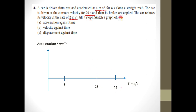To determine when the car stops, first calculate the velocity after the first 8 seconds. Based on the formula v = u + at, the velocity after the first 8 seconds, starting from rest, is: u = 0 plus a = 4 times t = 8, so you get 32 meters per second. That means the car achieves 32 meters per second after the first 8 seconds, and then maintains that speed for 20 seconds until 28 seconds.